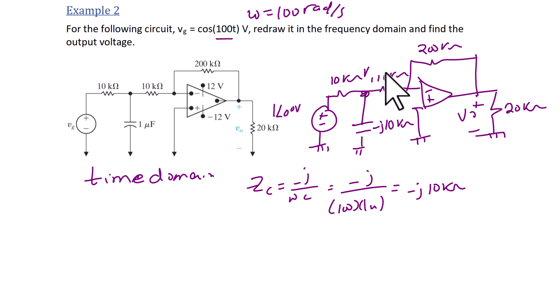So now we're going to do KCL at V1. And the KCL equation is V1 minus 1 over 10k, plus V1 minus 0 over 10k, plus V1 over negative j 10k. Notice that V positive is 0, so V negative is 0. And we get that V1 is equal to 0.447 with an angle of negative 26.57 degrees.